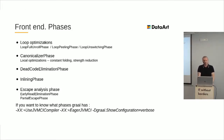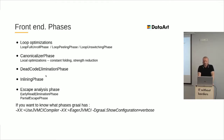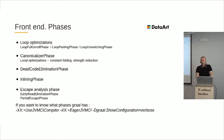The frontend consists of several phases that act on a high-level representation of bytecode, very close to the Java code. Here, loop optimizations are applied first, then the canonicalizer phase, then the code elimination phase. After these three phases, we have the inlining phase. The final one is escape analysis. GraalVM uses a new kind of escape analysis called partial escape analysis, which provides more rigorous information about object scopes and how to minimize allocations during program execution.